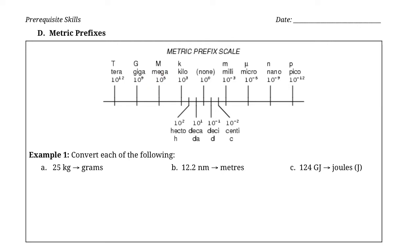Mega refers to a million — that's 10 to the 6. Giga is 10 to the 9, which is a billion. And tera is 10 to the 12, which is a trillion — so a trillion grams would make up a teragram, for example. This is very similar to how you hear gigabytes, terabytes, and megabytes in computers.